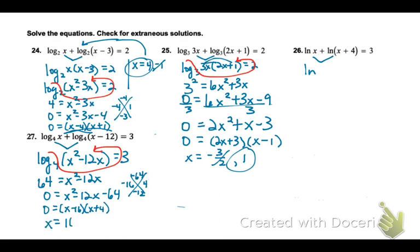And then if I plug them into my original, 16 is fine. I get positive log values. Left side equals the right side. But the negative gives me a negative log value, and that would be an error. We can't have a negative log value.